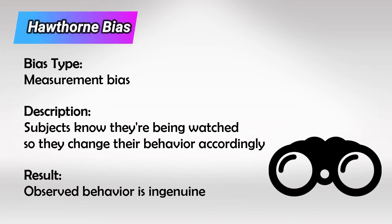Hawthorne bias is when the subjects of the study know that they're being watched, so they change their behaviors accordingly.